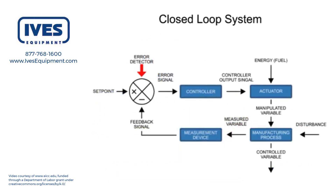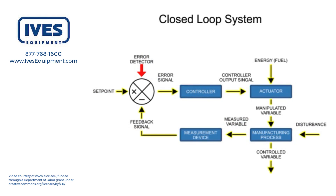Each block represents a function of the operation. Lines connecting the blocks indicate input and output signals of each function, with directional arrows indicating the process flow.